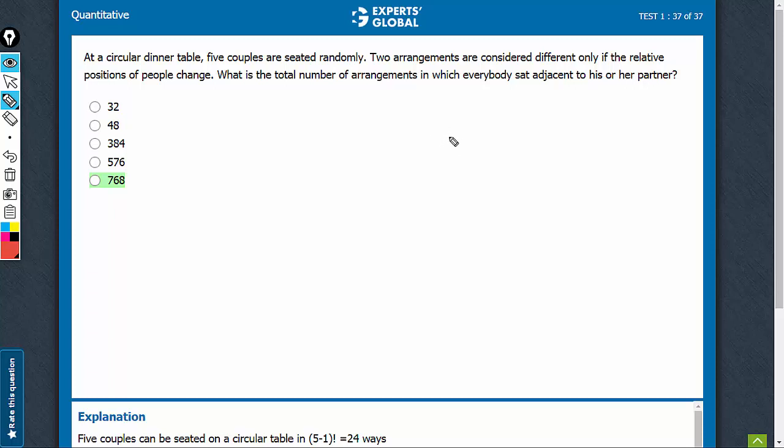Five couples are to be seated. So it's like saying there are only five elements and not 10 that are being seated. Now, each element has two elements within it, which is a different scenario.